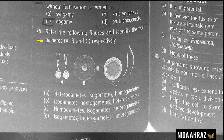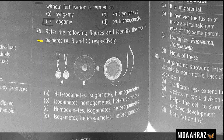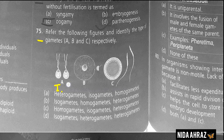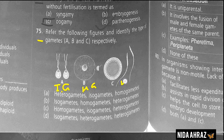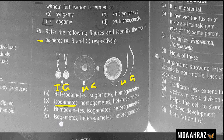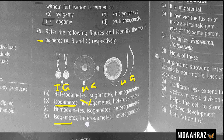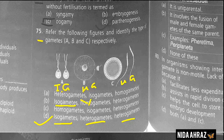Referring to the figures to identify the type of gametes A, B, and C respectively: A shows isogametes, B shows heterogametes, and C also shows heterogametes. Checking the options: isogametes, then heterogametes and heterogametes. Option D is the correct choice.